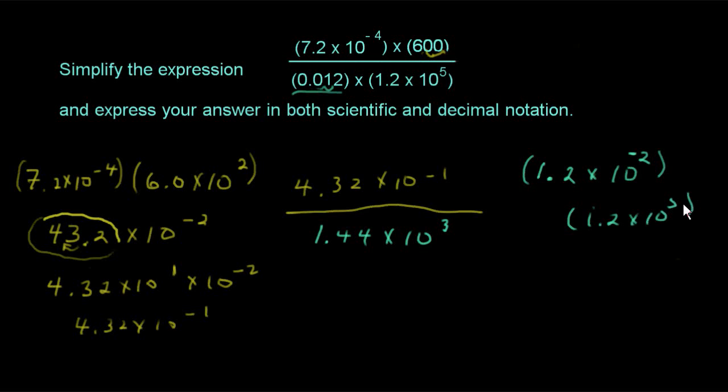When we multiply those two together, I believe we get 1.44 times 10, and we'll just add our exponents. Negative 2 plus 5, since we're multiplying, we add our exponents. That would be a positive 3. So 1.44 times 10 to the third for our denominator.